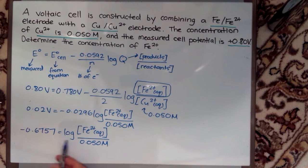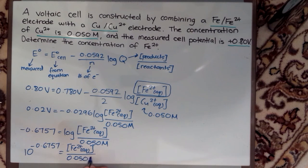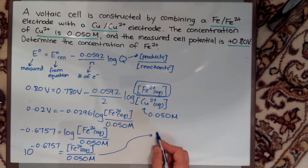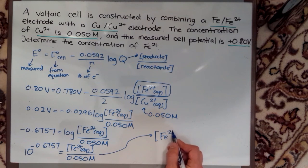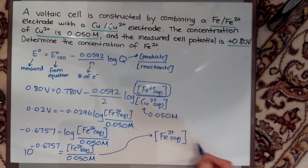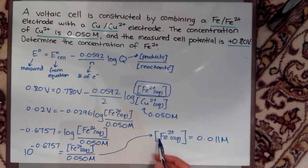Now to get rid of my log I'm just going to put everything to the power of 10, and then I just do my math. I'm left with my Fe2+ concentration which ends up being 0.011 mole per liter.